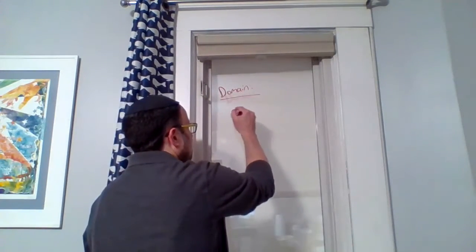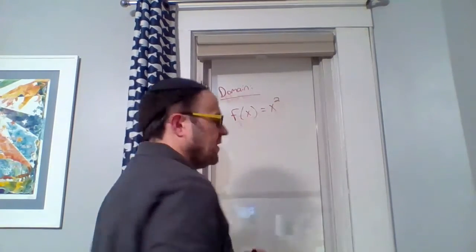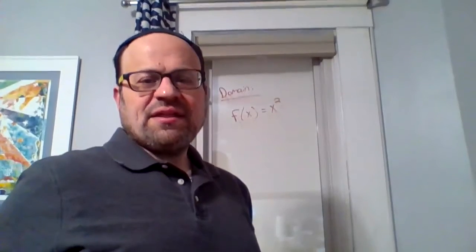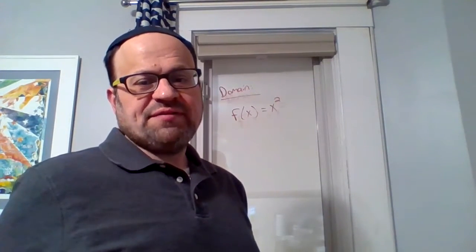So let's take a look at a function like f(x) equals x squared. What is x allowed to equal? Can x be zero? Sure, we can have zero squared.